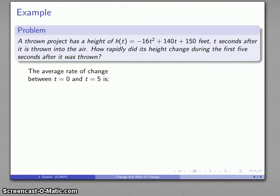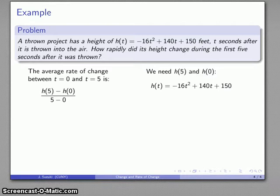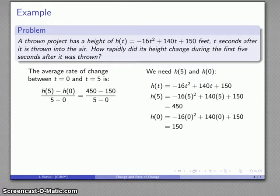The world might not ask us to find the average rate of change, but we can say that that's what we're going to find. The average rate of change between t equals zero and t equals five is h(5) minus h(0) over five minus zero. We need h(5) and h(0), so I'll evaluate those two. Substituting in zero gives my expression.